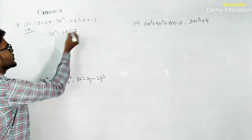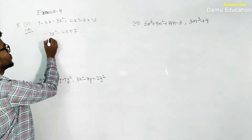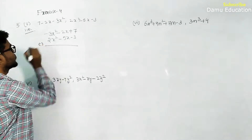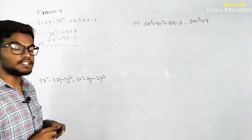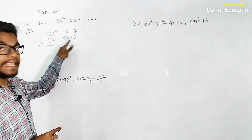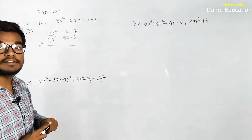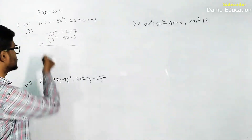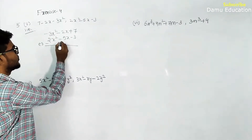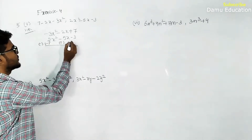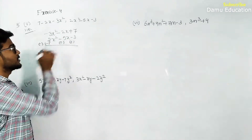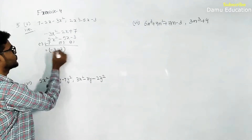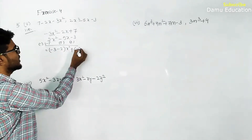Fifth question: 3x squared minus 2x plus 7, subtract 2x squared minus 5x minus 3. In vertical method, write the second expression below the first. For subtraction, we change all the symbols of the bottom expression: minus becomes plus, and plus becomes minus. So minus 5x becomes plus 5x, and minus 3 becomes plus 3.